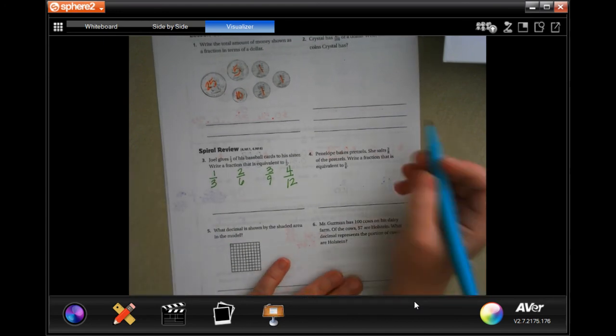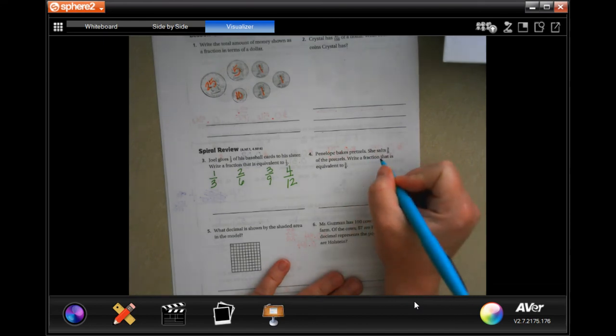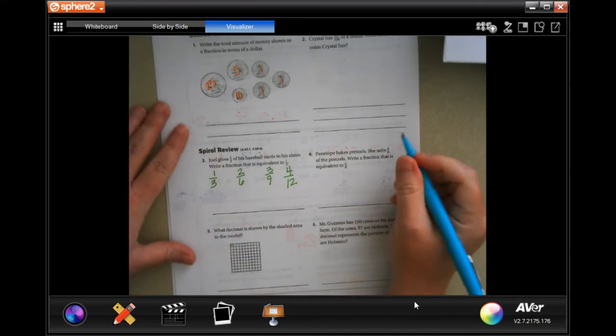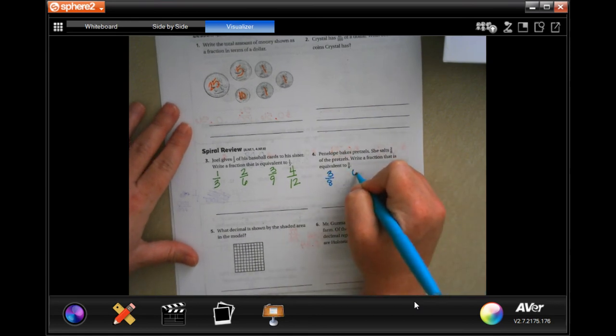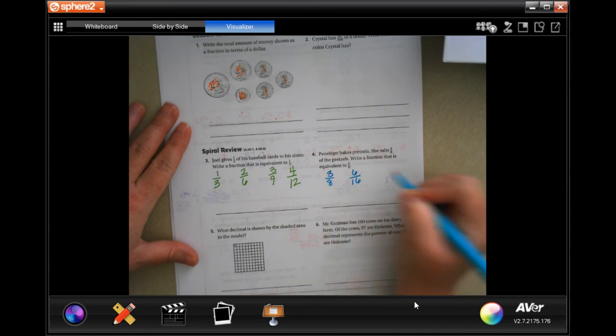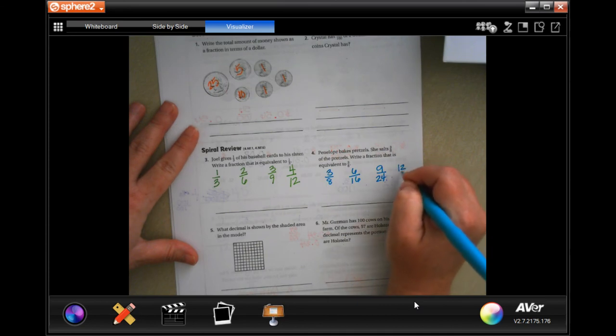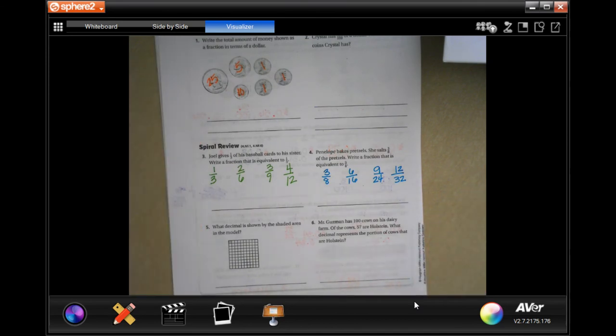Penelope makes pretzels. She sold three-eighths of the pretzels. Write a fraction that's equivalent to three-eighths. So, three-eighths. We could put six over 16. We could put nine over 24. We could put 12 over 32. You can pick any one of those and write it down.